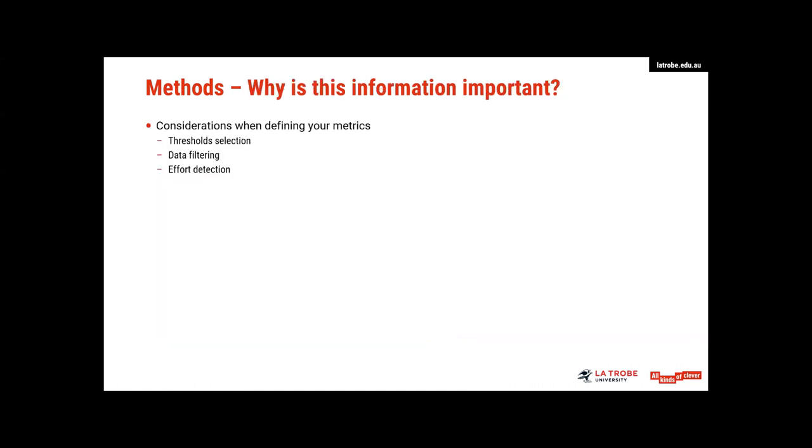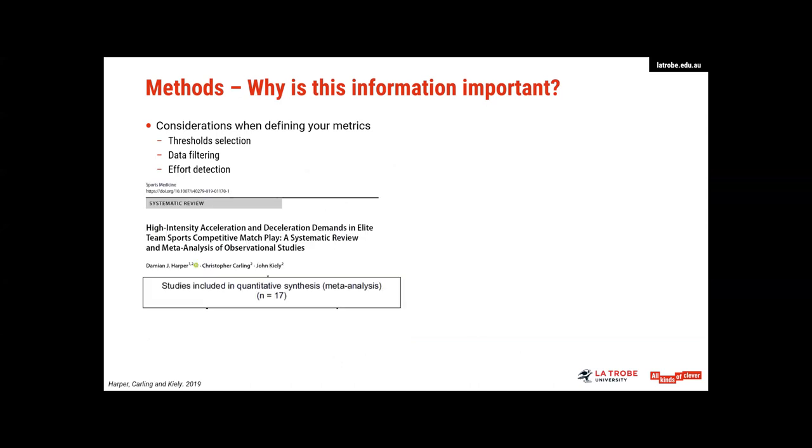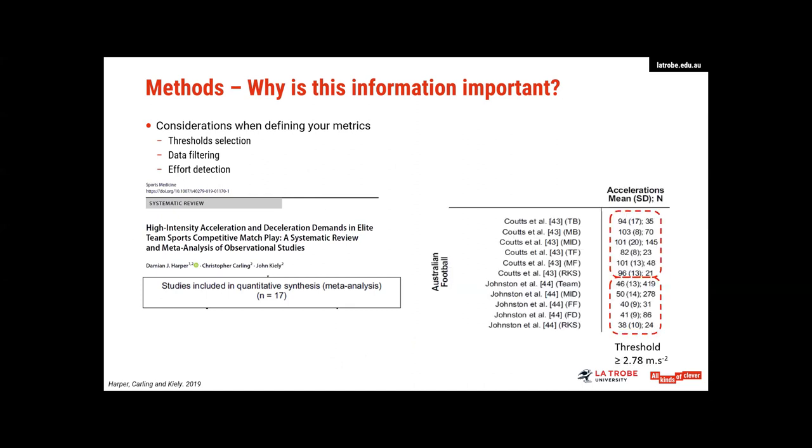So the final thing I want to stress on why I think understanding how we define our metrics is so important really comes, it's summed up nicely by a systematic review that Damien Harper, Chris Carling and John Keely actually published last year. So in this review, they looked at high intensity accelerations and decelerations from studies that had investigated this with elite team sports athletes. After their exclusion criteria, they came away with 17 studies where these efforts were reported from a range of different sports. Now, I've just picked two out to show you here from Australian football.